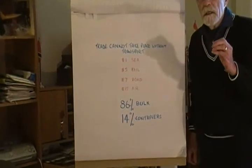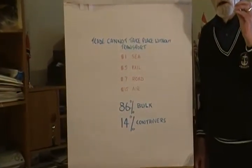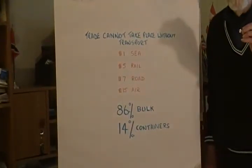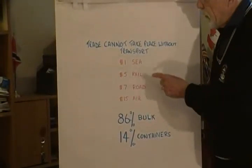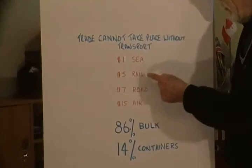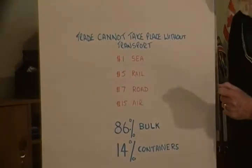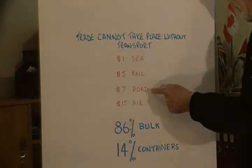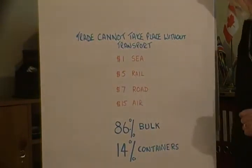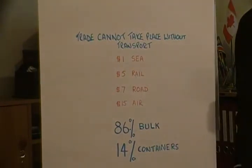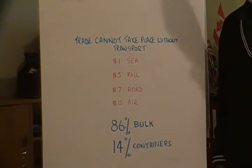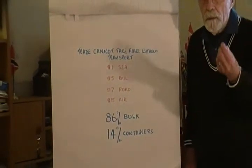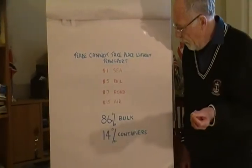Why is shipping the most economical form of transport? Why does it cost $1 by sea, $5 by rail, $7 by road, $15 by air? Well, the sea is free — you don't have to pay to use it.